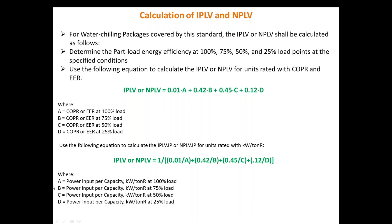The formula is: IPLV or NPLV = 0.01A + 0.42B + 0.45C + 0.12D. If you don't have COP or WR and instead you are using kilowatt per ton of refrigeration, then you simply inverse the formula: IPLV or NPLV = 1 / (0.01/A + 0.42/B + 0.45/C + 0.12/D). A slight modification in the formula is required when using kilowatt per ton units instead of COP or WR.